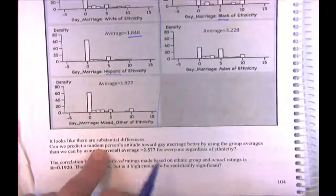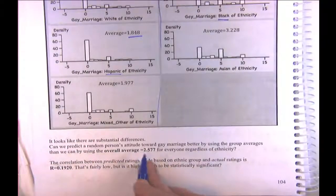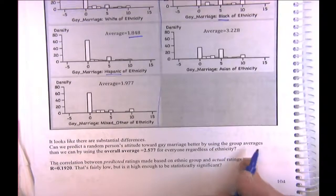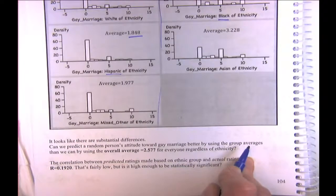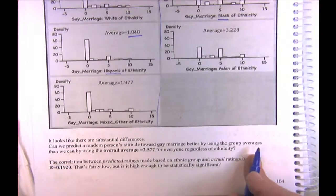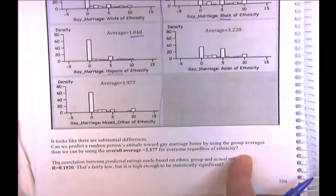The idea with these significance tests is: can we predict a random person's attitude towards gay marriage better by using the group averages — basically by using ethnicity as a predictor — rather than just the overall average regardless of ethnicity?